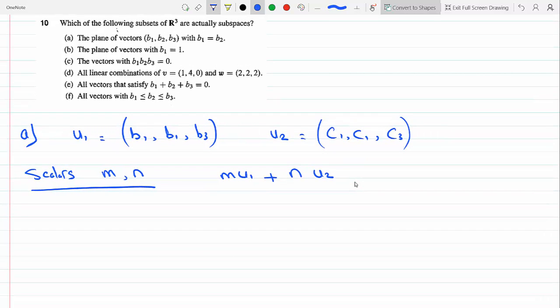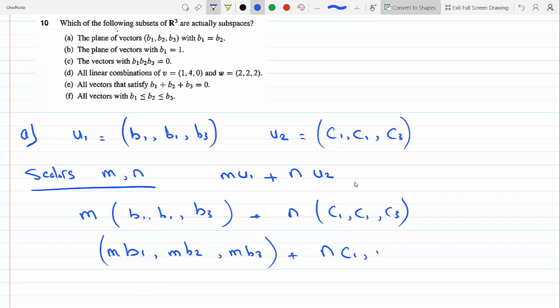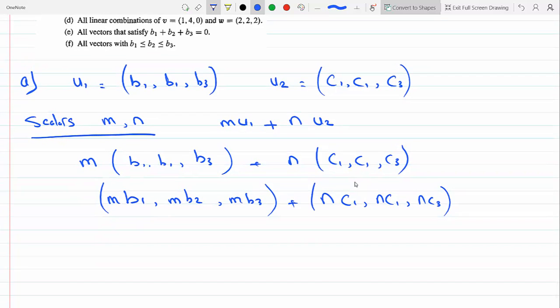Let's check it out. So M times U1 is B1, B1, B3 plus N, C1, C1, C3. And here we get M B1, M B2, M B3 plus, so I distributed the scalars on each one of them. Same thing on the second one: N C1, N C1, N C3. And now if I add the corresponding components, I get M B1 plus N C1.